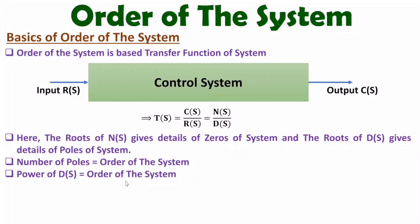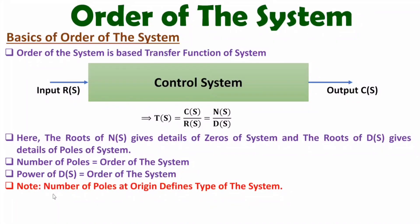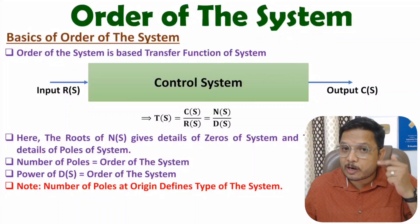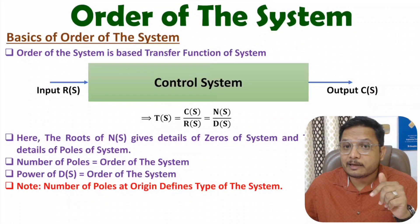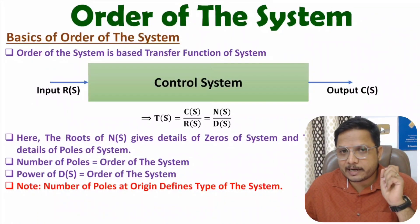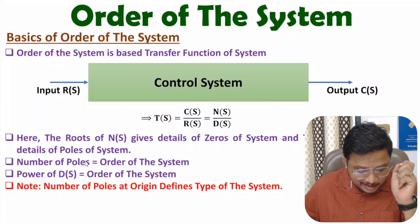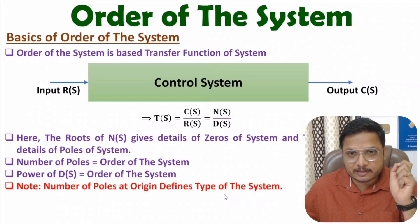One essential concept to note: there is a difference between the type of the system and the order of the system. Type of the system is based on poles at the origin. If you have one pole at origin, it is a Type 1 system. If you have zero poles at origin, it is a Type 0 system. Order is based on the total number of poles; type is based on poles at the origin.